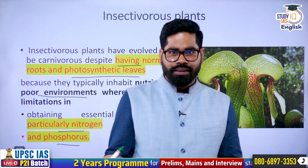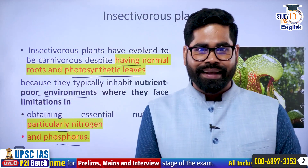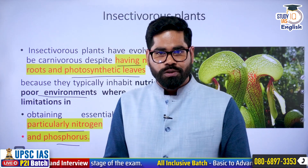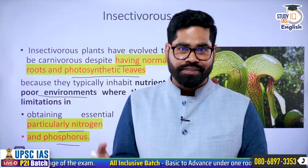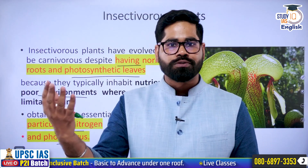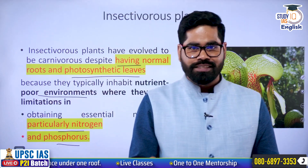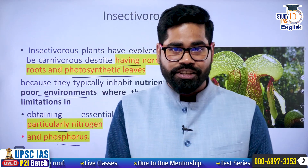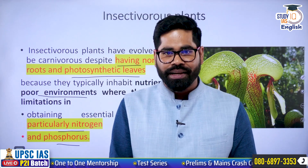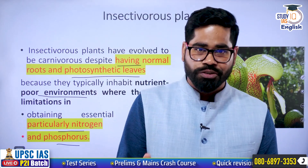Adaptations are very common in nature. Camels have long legs and a hump on their back for storing food and water. Desert plants like cactus have thorns instead of leaves. Mangrove vegetation has pneumatophores — roots that come out of the soil. Different plants have different adaptations. Similarly, insectivorous plants have a special adaptation: since photosynthesis alone cannot meet their nutritional requirement, they depend upon insects to get nitrogen and phosphorus.